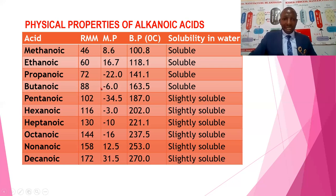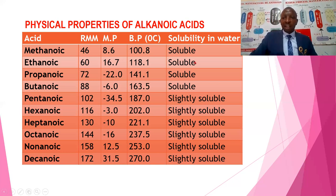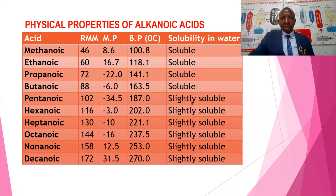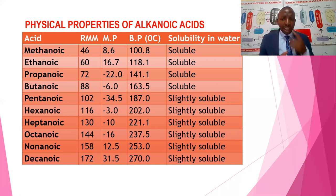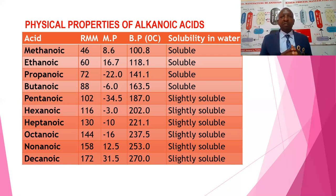With the melting point, there is no particular trend, so we cannot comment about the melting point. But there is a particular trend for boiling point, whereby there is an increase in the boiling point with the increase in molecular mass. For solubility, the first four are very soluble, forming a uniform solution with water, but from pentanoic onwards, solubility decreases and they become only slightly soluble. This chart summarizes everything about the properties of alkanoic acid.